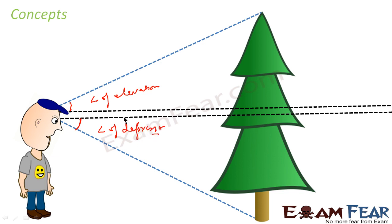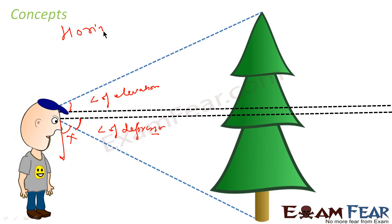In the case of angle of elevation, you see upward. In the case of angle of depression, you see downward. The angle is always formed with the horizontal line — we never take the vertical line. This horizontal line is always there, along with the line of sight, and this is important, so don't get confused.